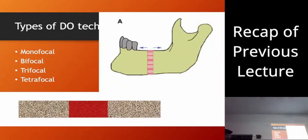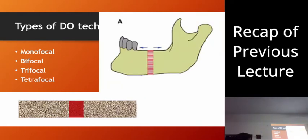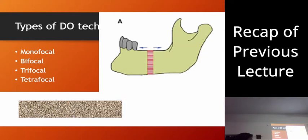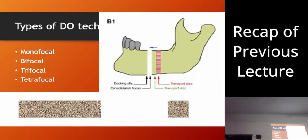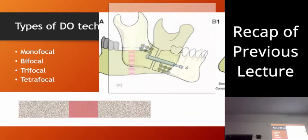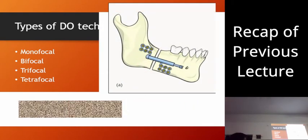This is an example of monofocal. In the mandible body region, we give an osteotomy cut and pull the segments apart — there's only one side where new bone formation occurs. This is monofocal distraction.